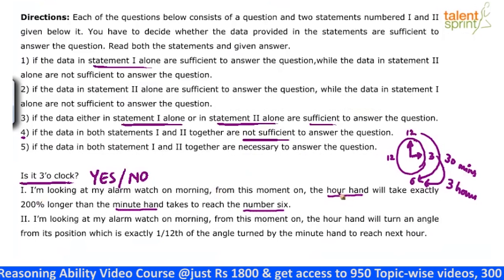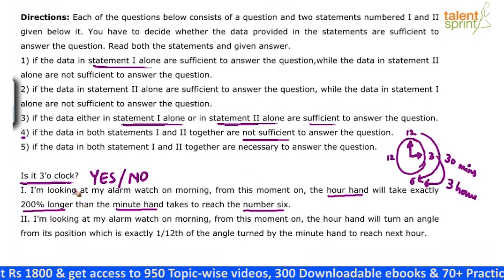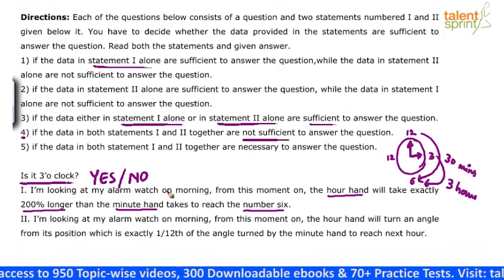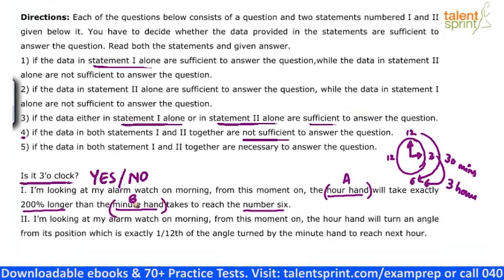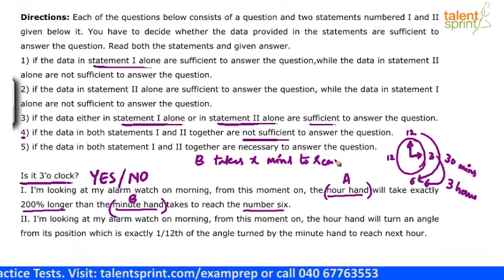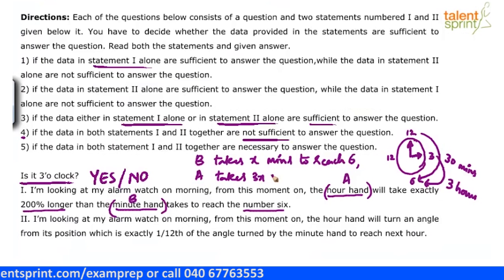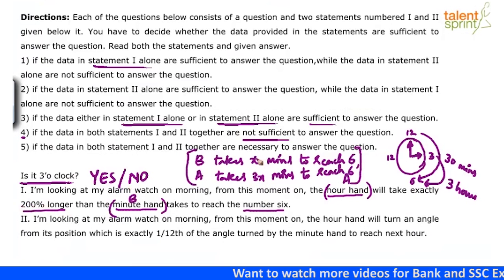The statement says the hour hand will take exactly 200% longer — that means if the minute hand takes x minutes, the hour hand will take 3x minutes. It's like person A (hour hand) and person B (minute hand). If B takes x minutes to reach 6, then A takes 3x minutes to reach 6. So x to 3x means 2x longer, which is 200% — 200% means 2 times more than the minute hand.